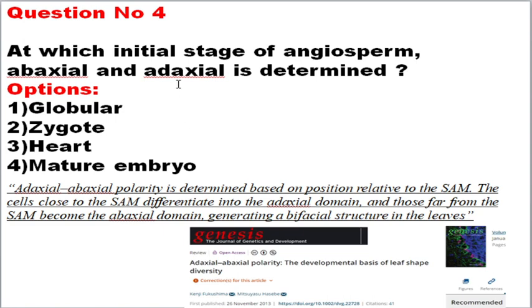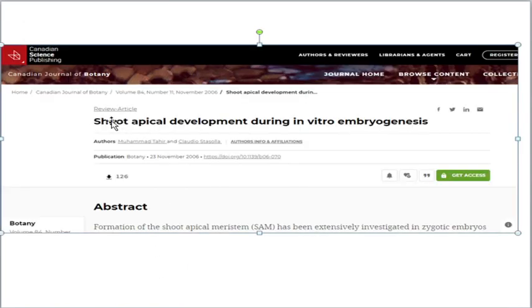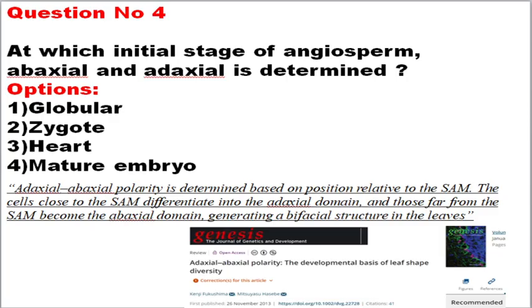The next question is: at which initial stage of an angiosperm embryo is abaxial and adaxial polarity determined? You can refer to the article published in Genesis and also the article published in Canadian Science Publishing. The correct answer is the globular stage. The adaxial and abaxial polarity is determined with respect to the SAM — shoot apical meristem. Cells close to the SAM will differentiate into the adaxial domain, and those far from it form the abaxial cells.